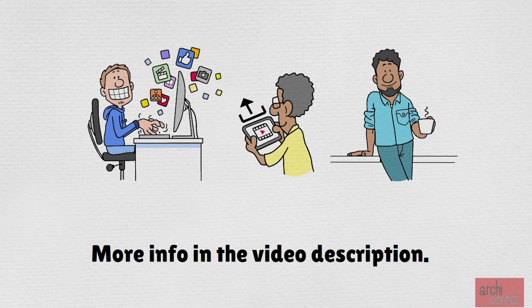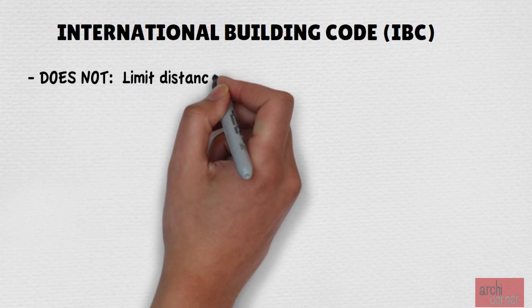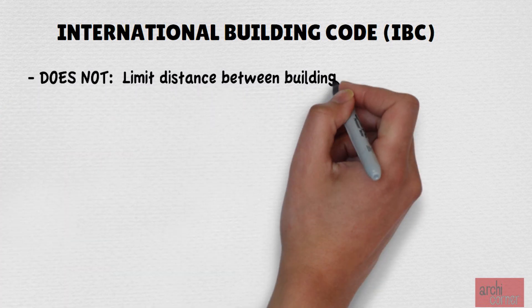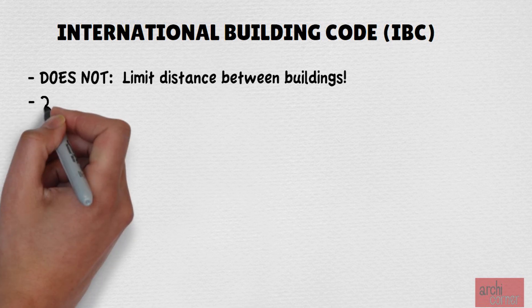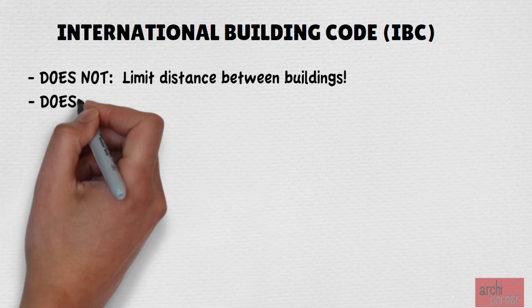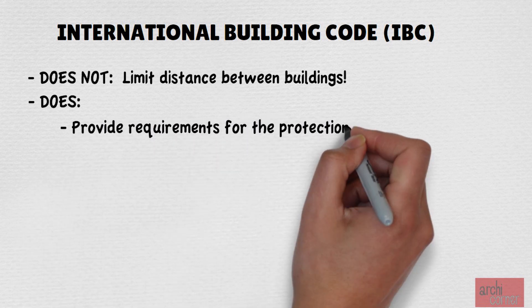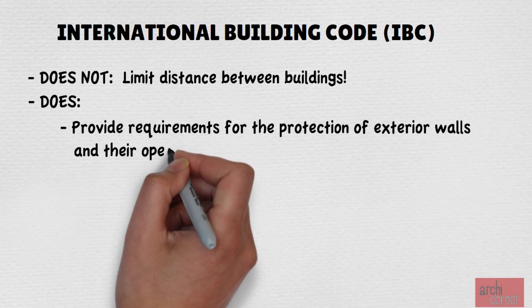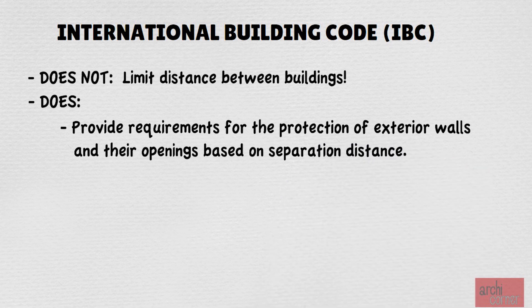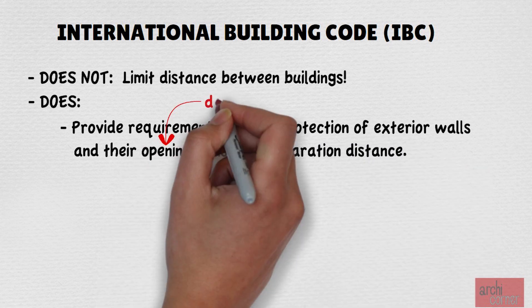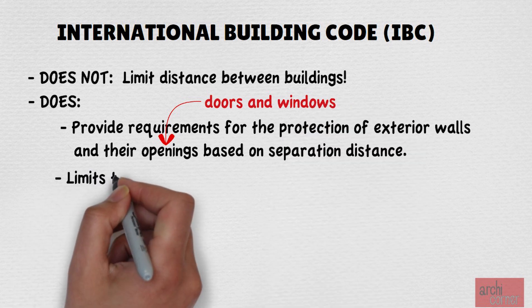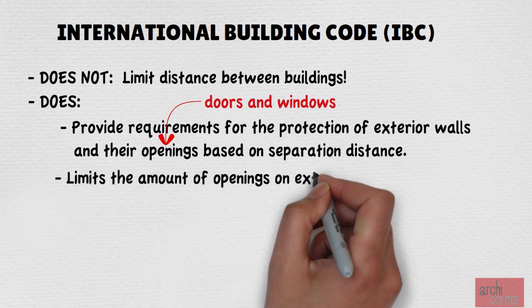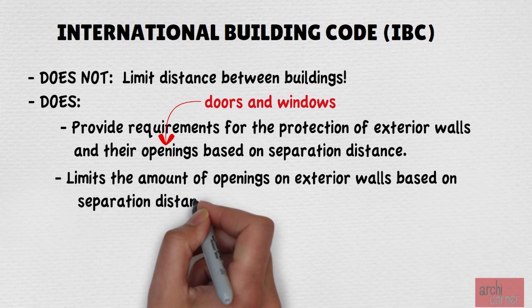Back to figuring out how the building code fits into all of this. To make sure this is clear once again, the building code does not limit the distance between buildings — in fact, many buildings are built right next to each other. It does, however, provide requirements for the protection of exterior walls and their openings based on separation. By the way, when the code makes references to openings, it is normally referring to doors and windows. The building code also limits the amount of openings on exterior walls based on separation.